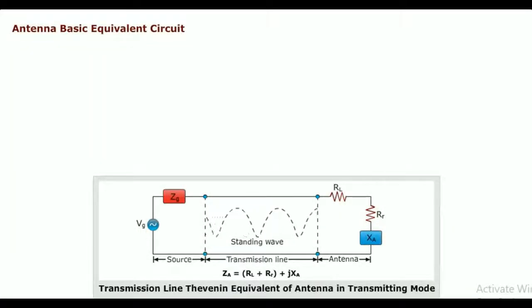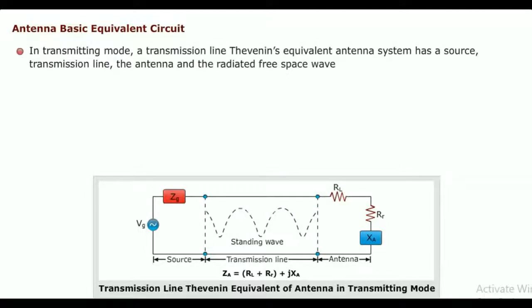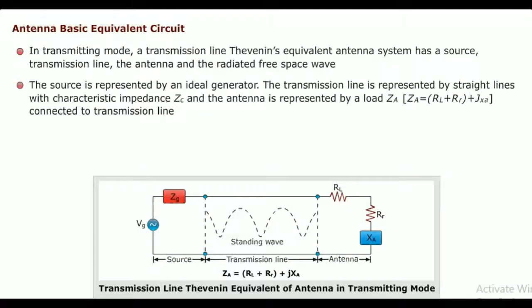In a basic equivalent circuit, in transmitting mode, a transmission line Thevenin's equivalent antenna system has a source, transmission line, the antenna, and the radiated free space wave. The source is represented by an ideal generator, the transmission line is represented by straight lines with characteristic impedance Zc, and the antenna is represented by a load Za equal to RL plus RR plus jXa connected to the transmission line.